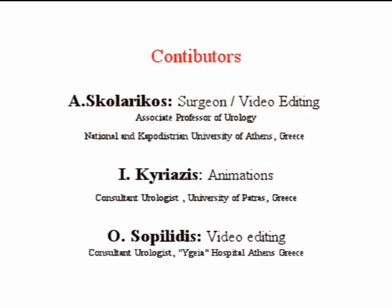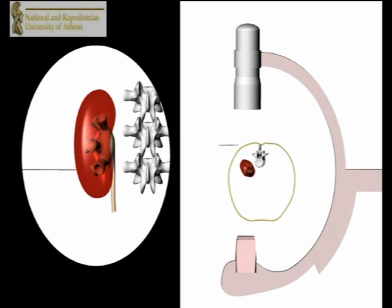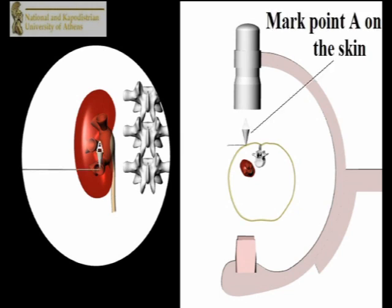In the triangulation technique, the C-arm is positioned over the patient in the vertical 90 degree position and the skin over the desired calyx is marked.